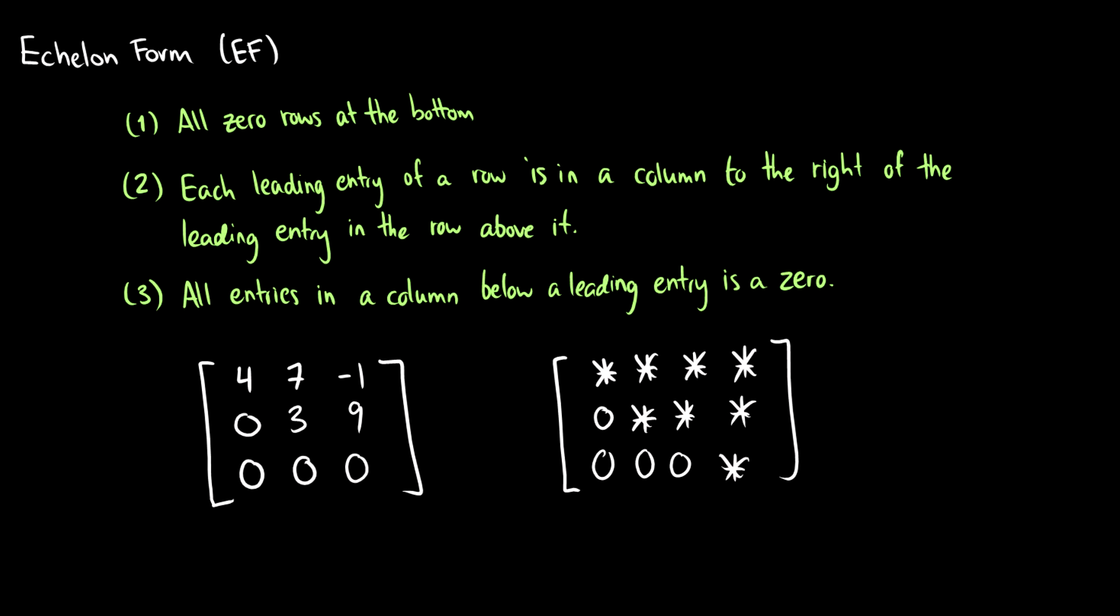The second condition is each leading entry of a row is in a column to the right of the leading entry in the row above it. A leading entry is a number that is not zero. For instance, this 4 is a leading entry of the first row and the next leading entry in the following row will be to the right. Basically, this means they have to be staggered—you cannot have another leading entry directly below another leading entry.